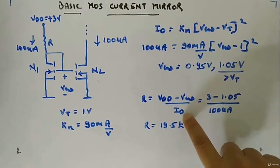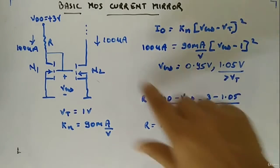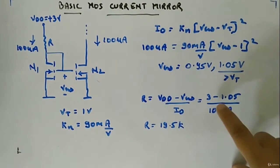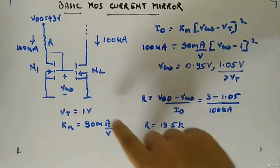So R will be VDD minus VGS divided by IT, that is IRF, which is same as I naught or ID. So 3 minus 1.05, this is 3 volt given, divided by 100 microampere. That will give you 19.5 kilo ohm.